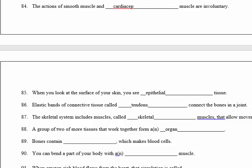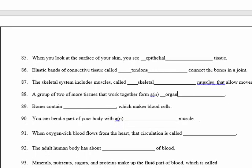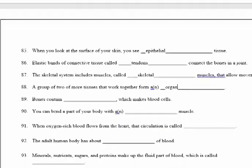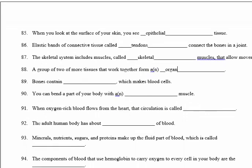We're going a little faster here because we already explained most of this during the multiple choice. Number 89: bones contain marrow, which makes the blood cells — the marrow present inside the bones helps in making blood cells.